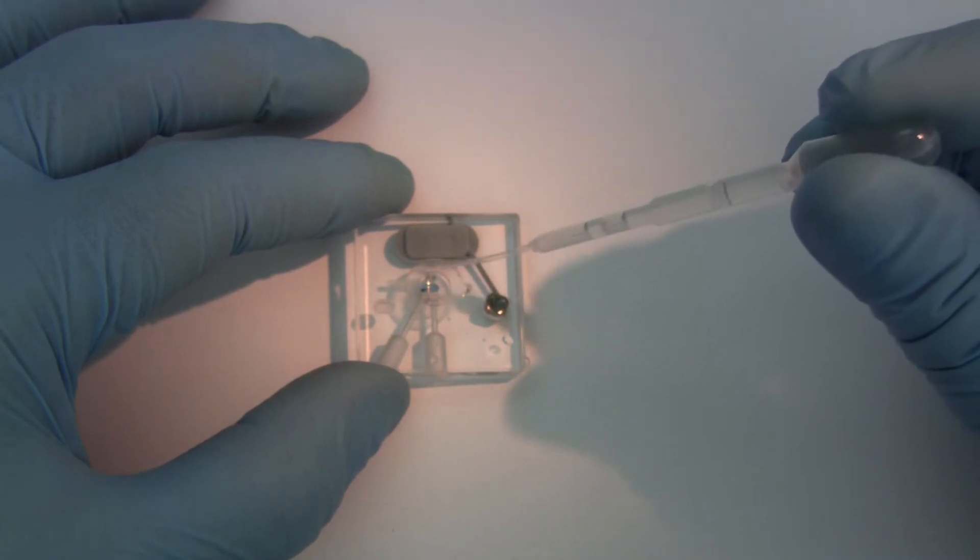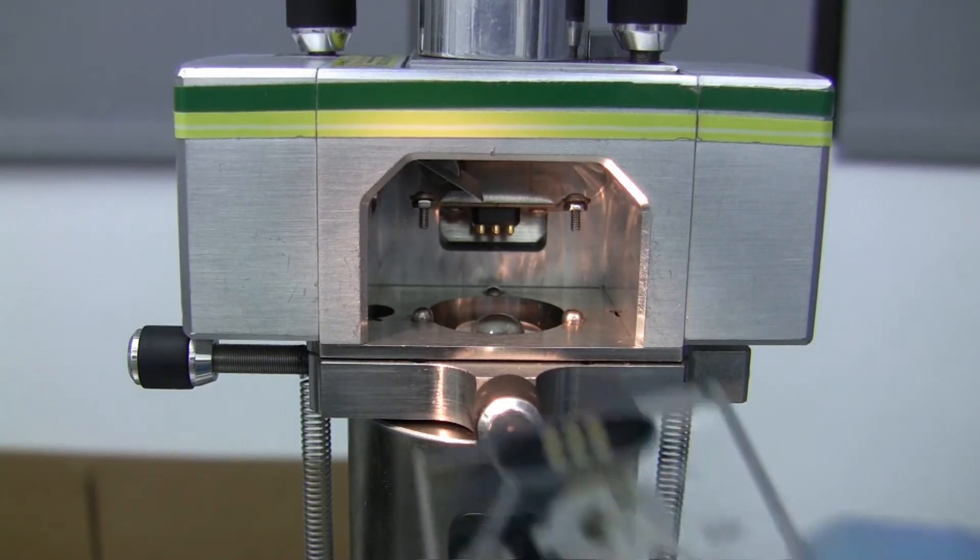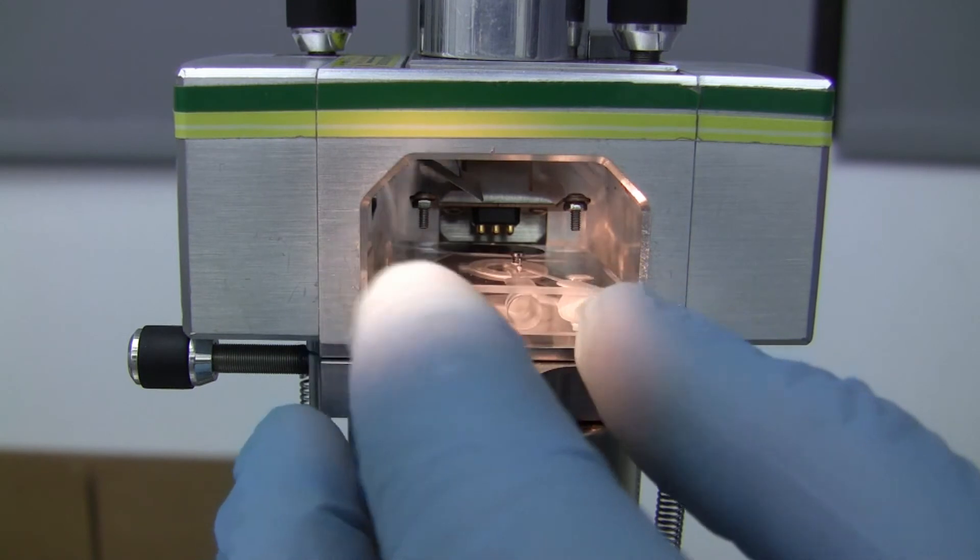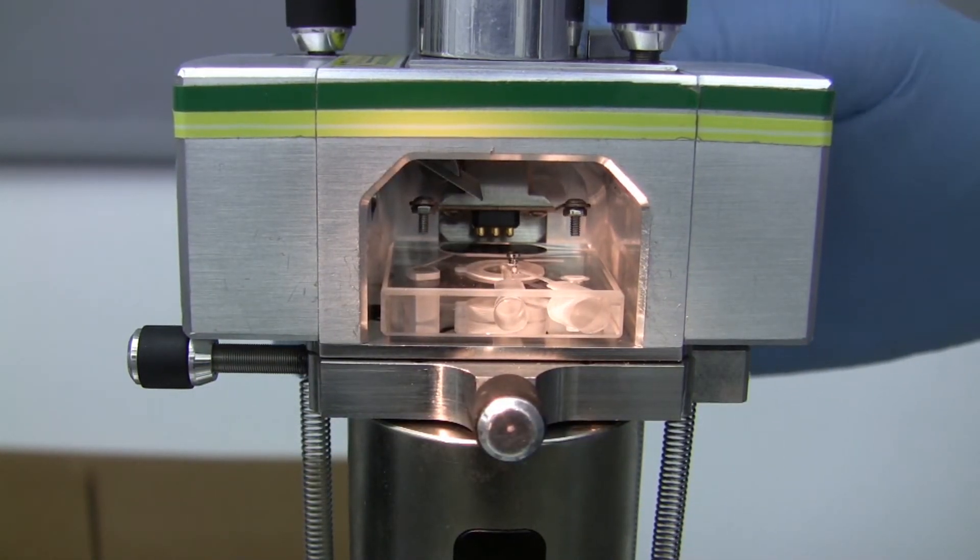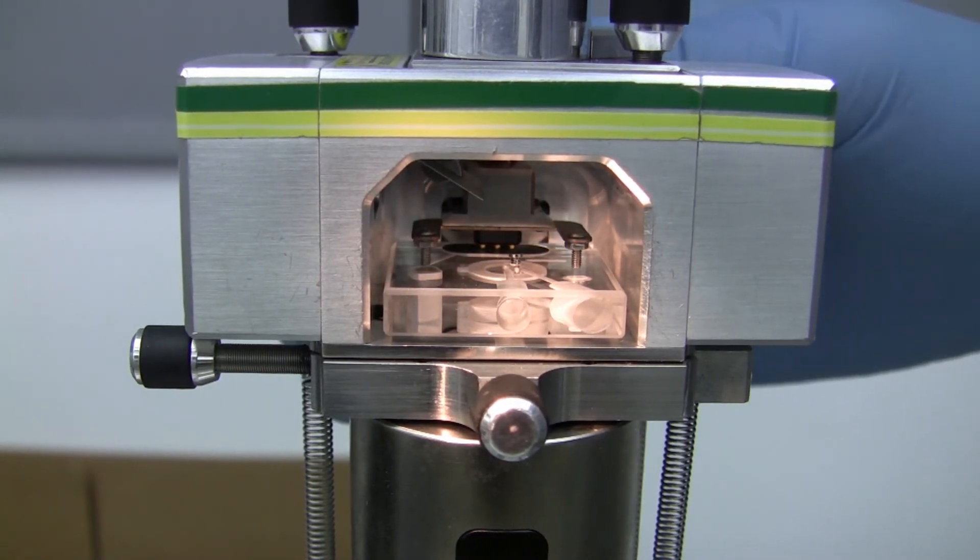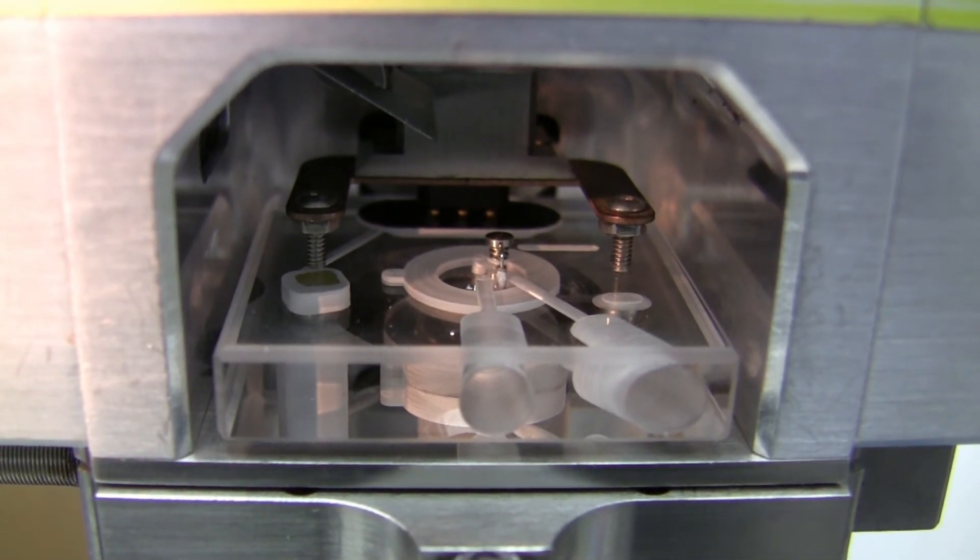Deposit enough liquid over the probe carrier to cover the probe. Put the carrier back into the head and secure it in place. Lower the head back down until the fluid droplets merge together.